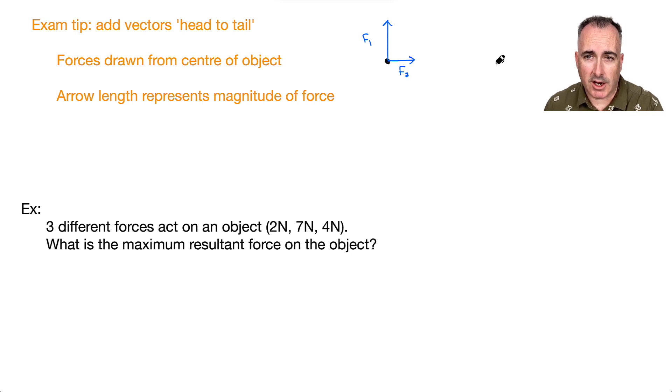That was F1, and if I wanted to do F2, you always add vectors head to tail. In other words, the head of one is the tail of the other. Let's say it went like this. That means my resultant force would be something that goes like this. This would be my total force, which is F1 plus F2. That's how you add vectors.